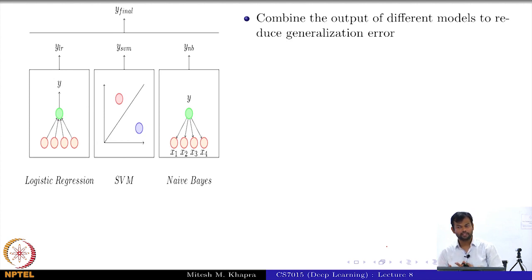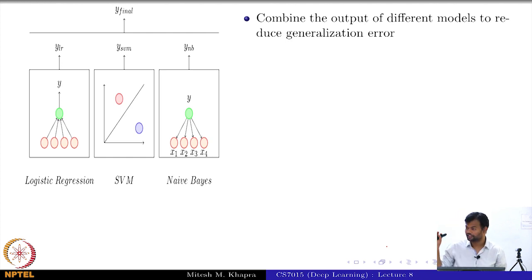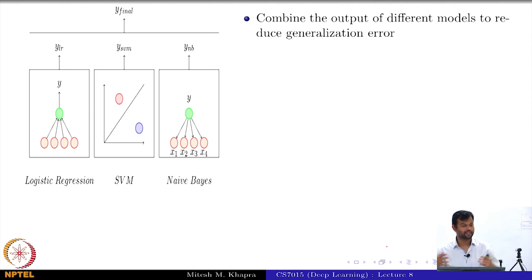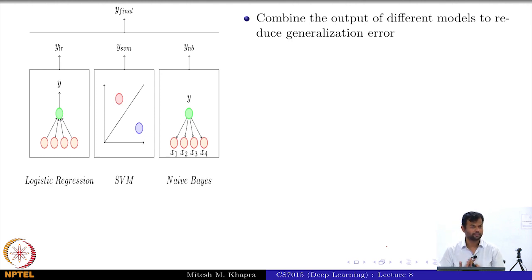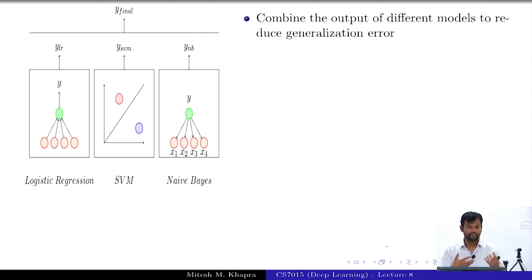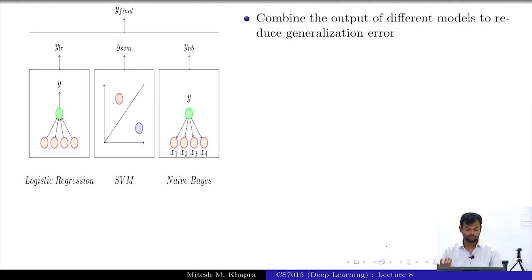How many of you have seen ensembles before? We did cover it in machine learning. The ensemble is essentially just combining the output of different models to reduce the generalization error. Why does that make sense? These different models would all have different biases and variances. So by combining them, we will end up with a better result on the test error. That is the idea behind ensembles.